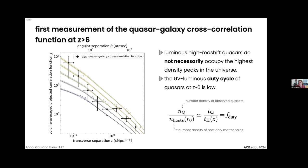It also then implies that the UV-luminous duty cycle of these high-redshift quasars is low. If you compare the number density of observed quasars to the number density of these host dark matter halos we get from Lambda CDM, once we have a mass of these host dark matter halos, that roughly tells you the number of galaxies that currently host an accreting supermassive black hole in their center, which is equivalent to the quasar's duty cycle.